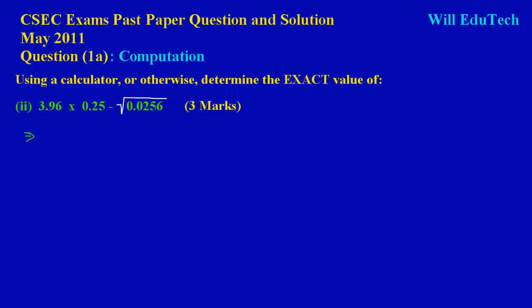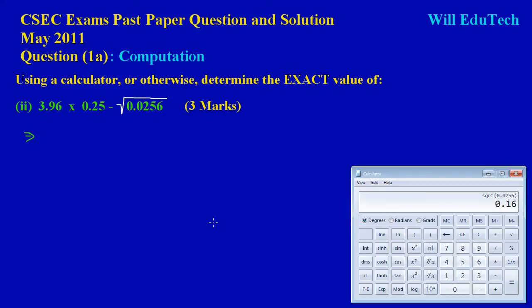This implies that 3.96 times... The question states we can use our calculator, so let's pull out our calculator quickly. Let me just clear that. What I'm entering here is 3.96, and I'm multiplying...